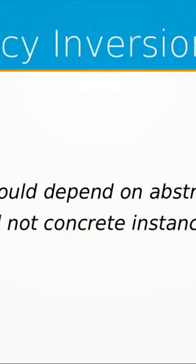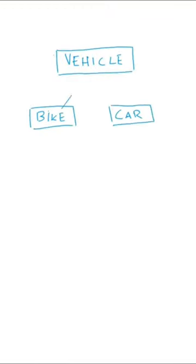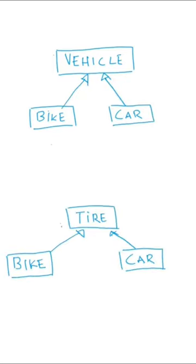We get to the dependency inversion principle. The dependency inversion principle says one should depend on abstraction and not concrete instances. Again, related with all the rest of the principles that we already saw — instead of having a specific car with specific instances of tires, for example, you could have a generic interface implementing tires and all the types of tires, and your specific vehicle would have a dependency on that interface or on that class.